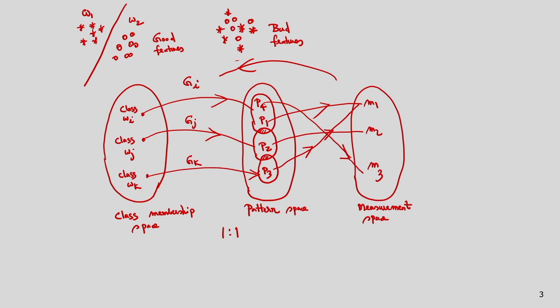Statistically, what is the meaning of pattern classification? Statistically, we have to determine the probability of omega j given x, where omega j is a class and x is the feature vector. That means: what is the probability of obtaining a particular class given the feature vector? This is the objective of statistical pattern classification.